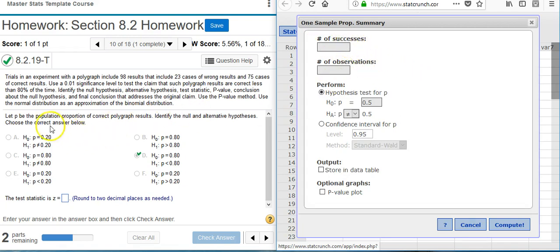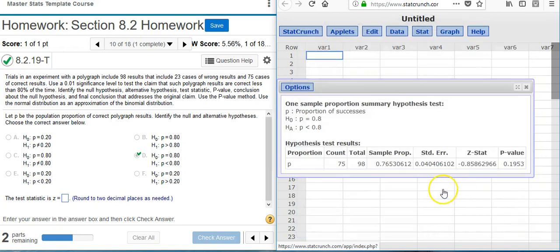In the options window that appears, the number of successes, remember that the population proportion is identified as being those with the correct polygraph results. So looking at the problem statement here, how many of the sample results are correct results? That's going to be the 75. So that's what I put here in the first field. The number of observations is the total number in the sample. That's 98. I want hypothesis testing. Here we need to match these fields with the correct null and alternative hypothesis that we identified earlier. So I change these fields to match. And once I've done that, I'm ready to hit Compute and get my results.